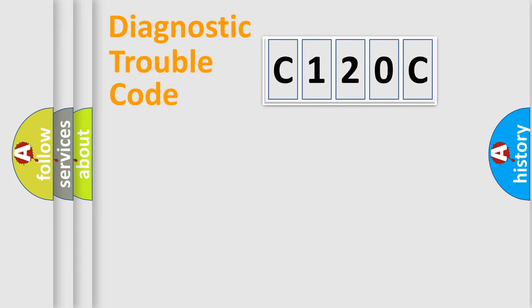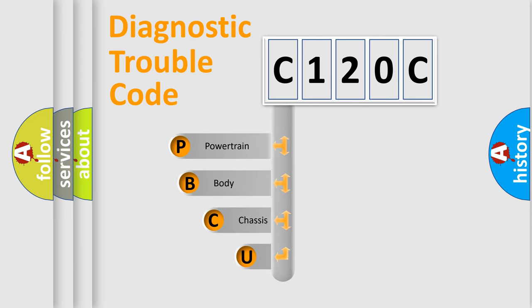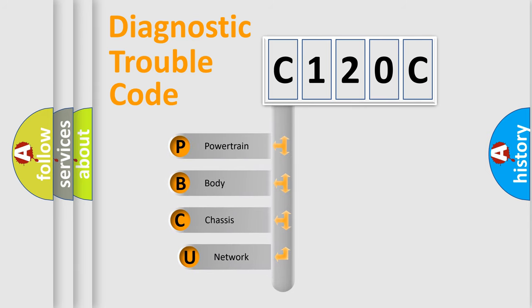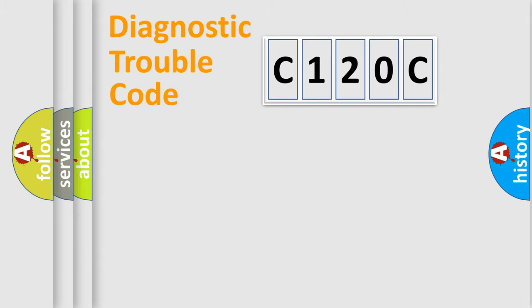Let's do this. First, let's look at the history of diagnostic fault code composition according to the OBD2 protocol, which is unified for all automakers since 2000. We divide the electric system of automobile into four basic units: Powertrain, Body, Chassis, and Network.